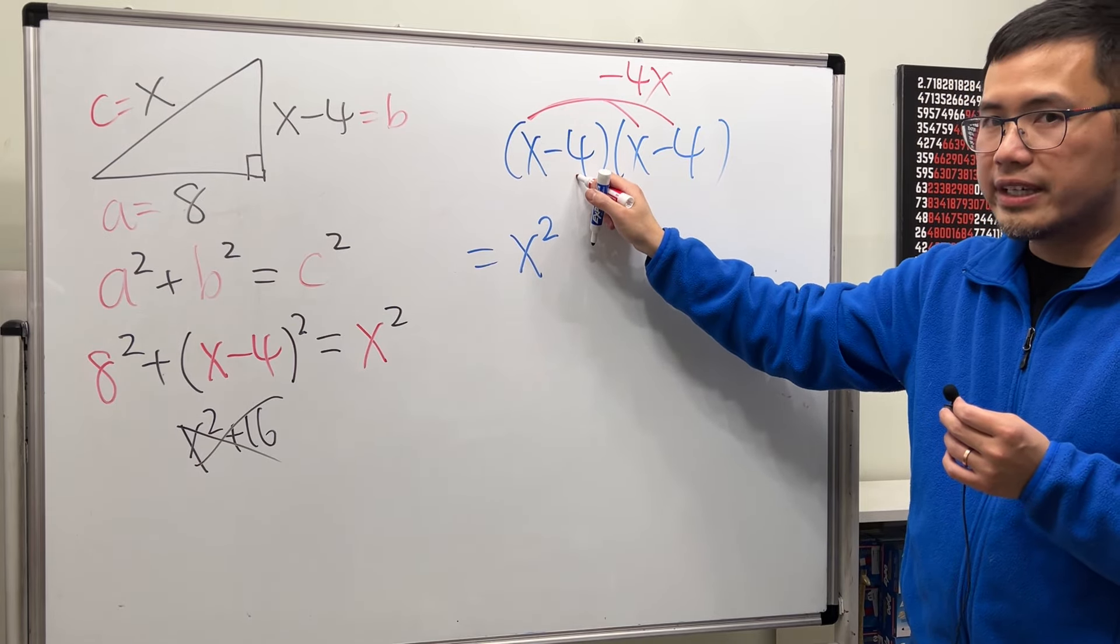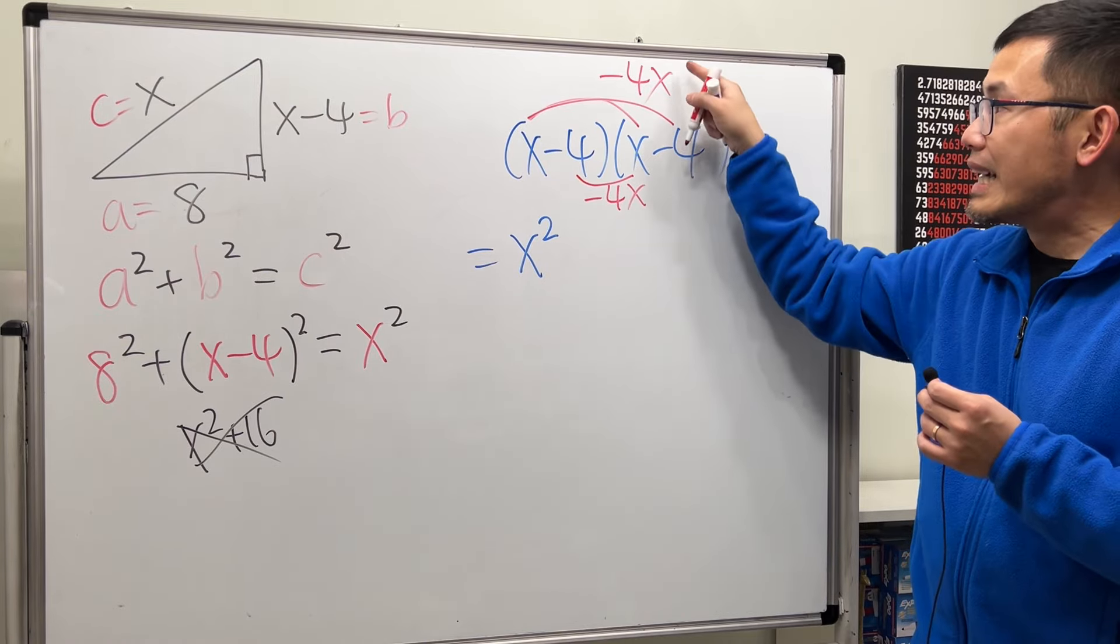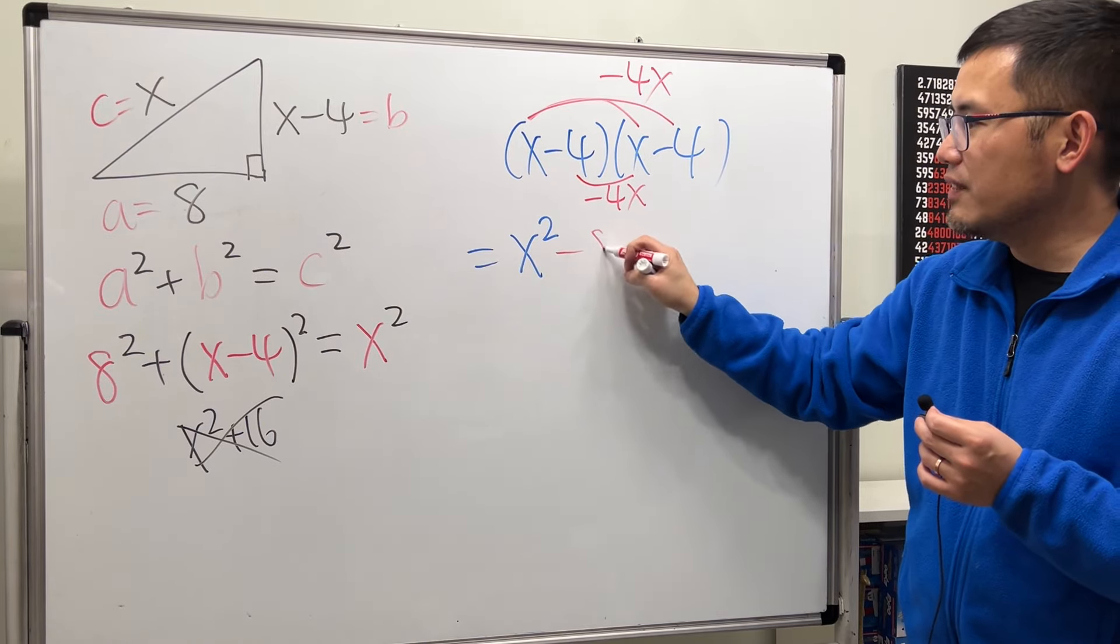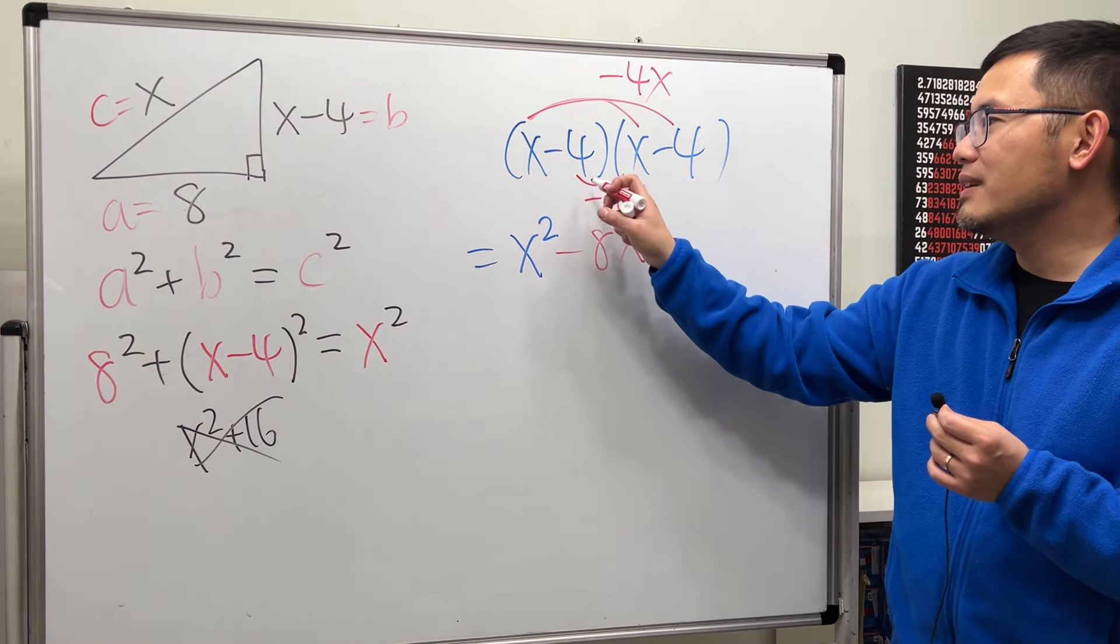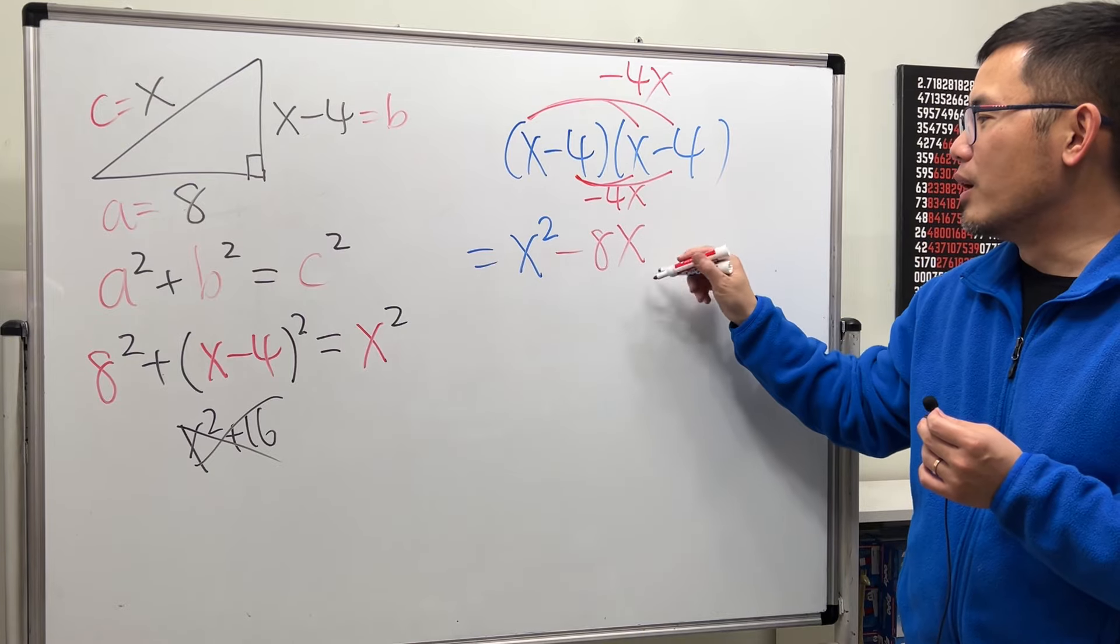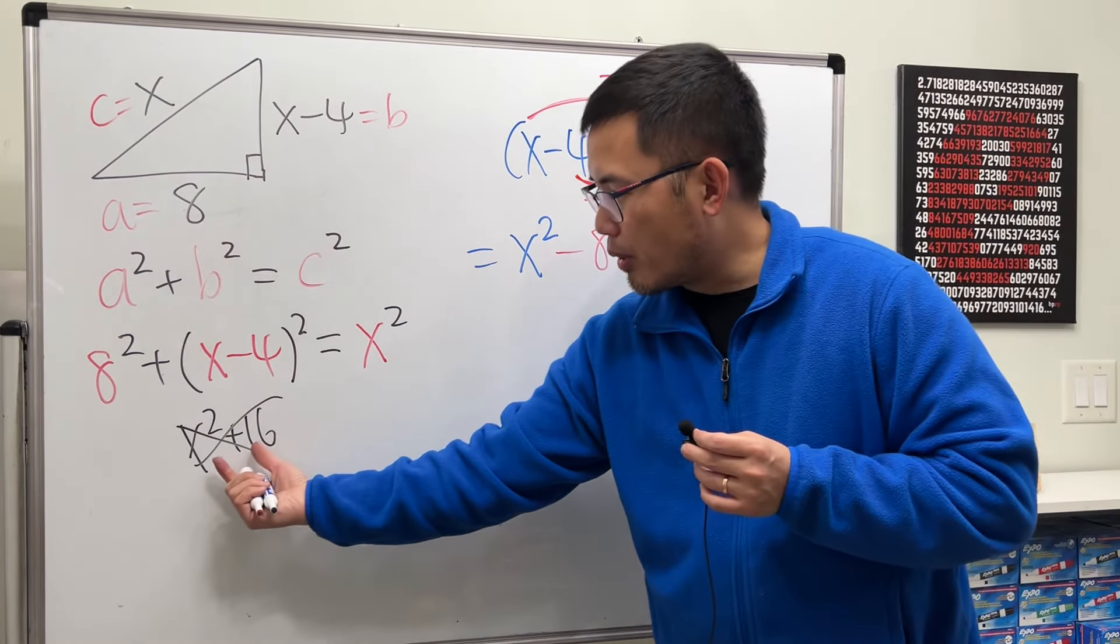You continue by multiplying negative 4 with x. That's another negative 4x. Combining them, we get negative 8x. This is the part that we have to have. And then finally, negative 4 times negative 4, we have the plus 16. So you were missing that part right here.